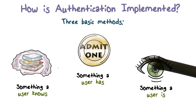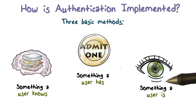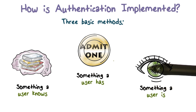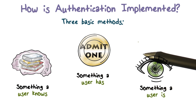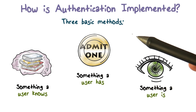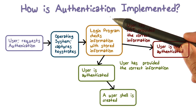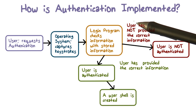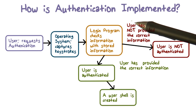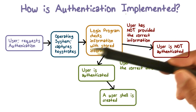Something you know, something you have, or something you are — these are the three basic methods used in almost all authentication techniques in computer systems. We're going to look a little more deeply into how authentication is implemented using one of these methods: the secret shared with the system, something you have, or something you are.